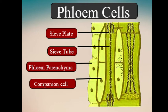which have small holes in them. These holes in the sieve plates allow the food to pass along the phloem tubes.